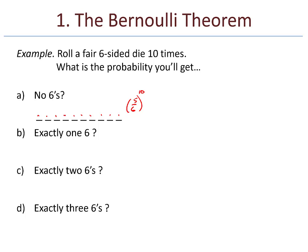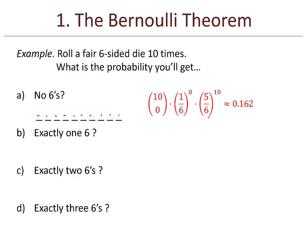Let me put this into a form that is a little bit more reminiscent of the Bernoulli trials from the previous section. I might express this as ten choose zero, because there are zero sixes, times one-sixth to the zero, because the six never appears, times five-sixths — the probability of not a six — raised to the tenth. So it's the same thing: five-sixths raised to the tenth, and we see the numerical approximation there.